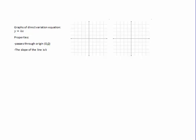The graphs of direct variation, excuse me, the graphs of the direct variation equation, y equals kx, it has a couple of properties. First of all, it passes through the origin at 0, 0, and the slope of the line is k. The slope here, mind you, the slope is k.